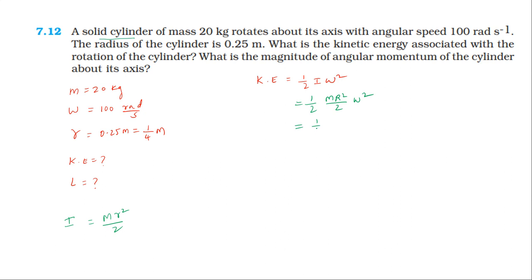Substituting: 1 by 2 into mass 20, into radius 1 by 4 squared, into 1 by 2, into omega 100 squared. So kinetic energy comes out to be 3125 joules.